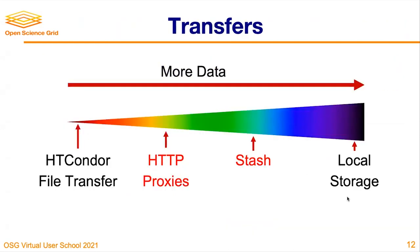Just like we had a spectrum with the laptop to the cluster to the OSG, we have the same spectrum with transfer mechanisms. On the left we have HTCondor file transfer, which you've probably already used in previous exercises. Then HTTP proxies and Stash, which we'll talk about today. And finally, local storage, which we'll just touch on. As you go further to the right, you're able to handle more data, but there's a little more planning required at each step.